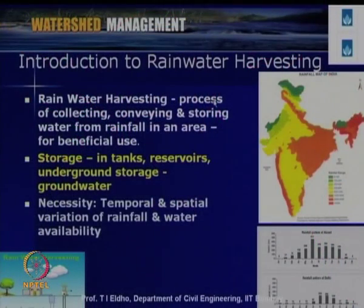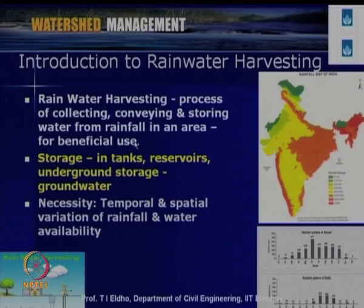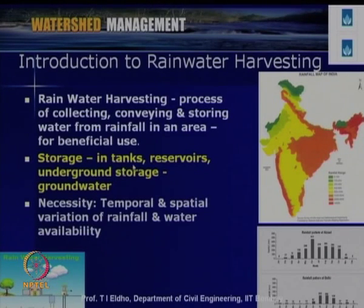Rainwater harvesting can be defined as a process of collecting, conveying, and storing water from rainfall in an area for beneficial use. The use can be for domestic, agricultural, or any other purpose. Generally, storage can be in tanks, reservoirs, or underground storage like groundwater.